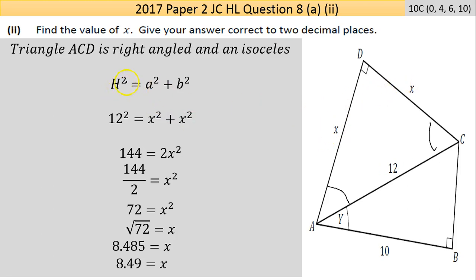The hypotenuse squared is equal to the sum of the squares of the two sides. We know that both sides are X, so 12 squared equals x squared plus x squared. 144 equals 2x squared. You bring the two across - it was multiplying on the right so it divides on the left.